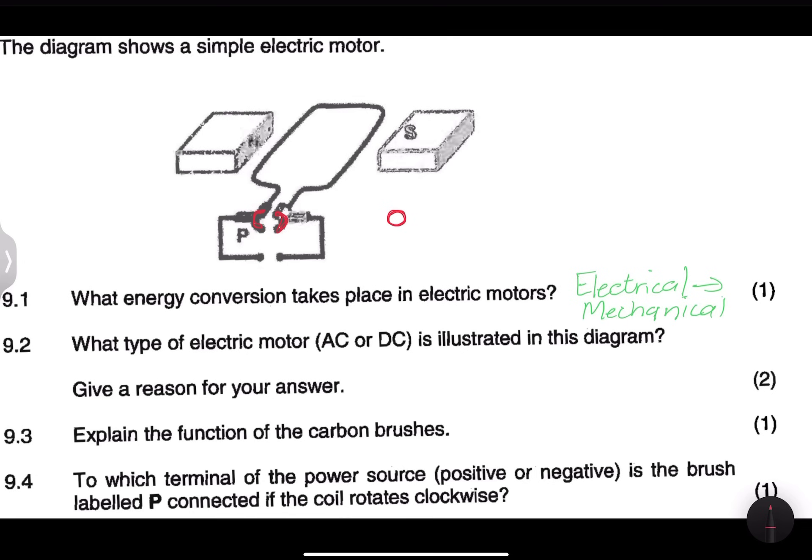But I want you to please remember. So when you've got your split rings, I always just try and remember it this way. When you've got split rings, it looks like a C and a D. So that would be DC. Of course, if you've got your full rings, then it's going to be AC. So in this case, to answer that question, it would be a DC motor.